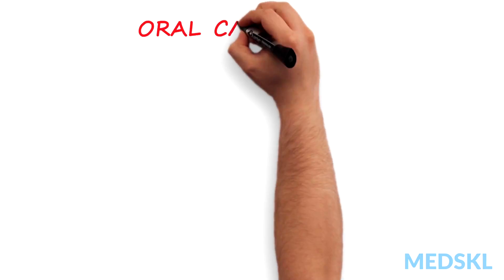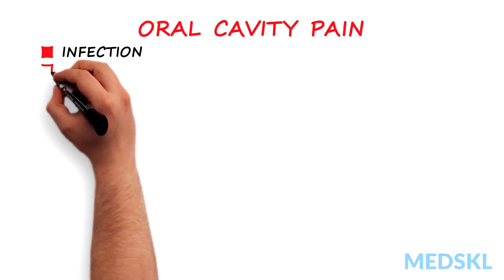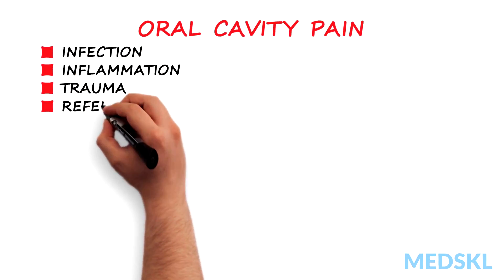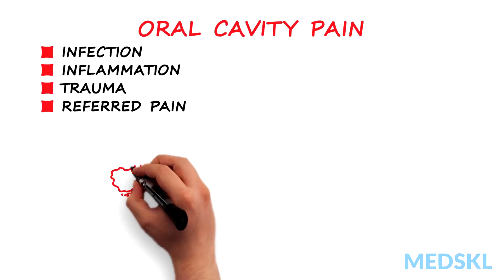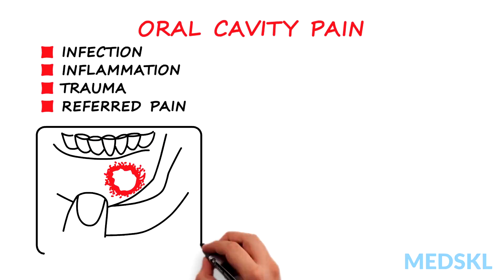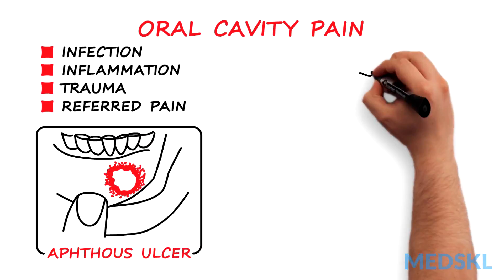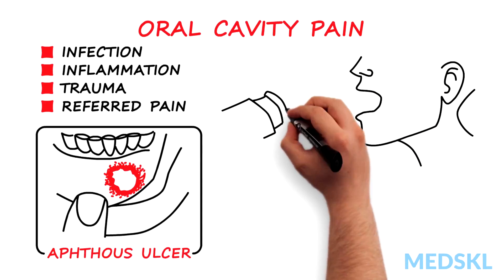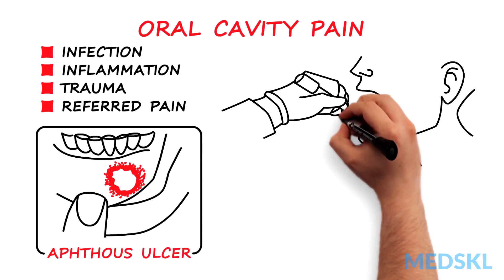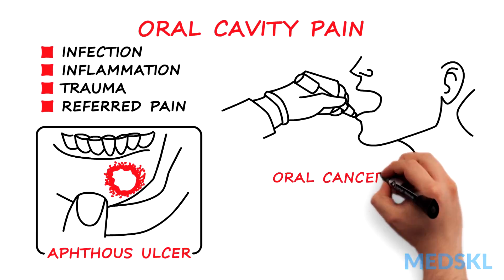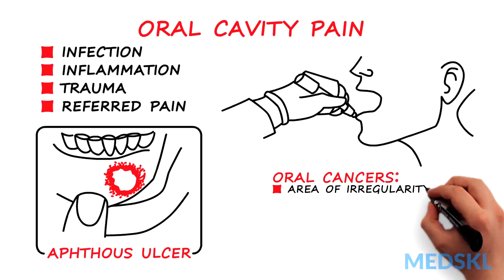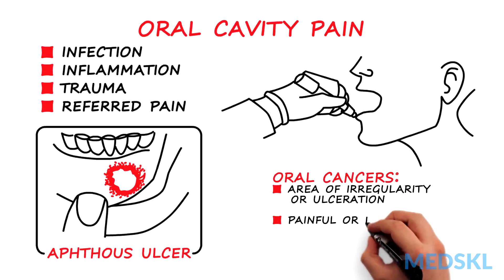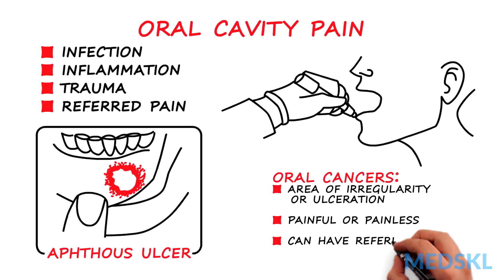Pain in the oral cavity can be due to infection, inflammation, trauma, or even referred pain. The most common type of painful ulceration is an aphthous ulcer, a self-limiting condition. However, any persistent area of ulceration warrants a biopsy to rule out malignancy. Oral cancers typically present as an area of irregularity or ulceration that can be painful or painless. Referred otalgia, or ear pain, is often an accompanying symptom.